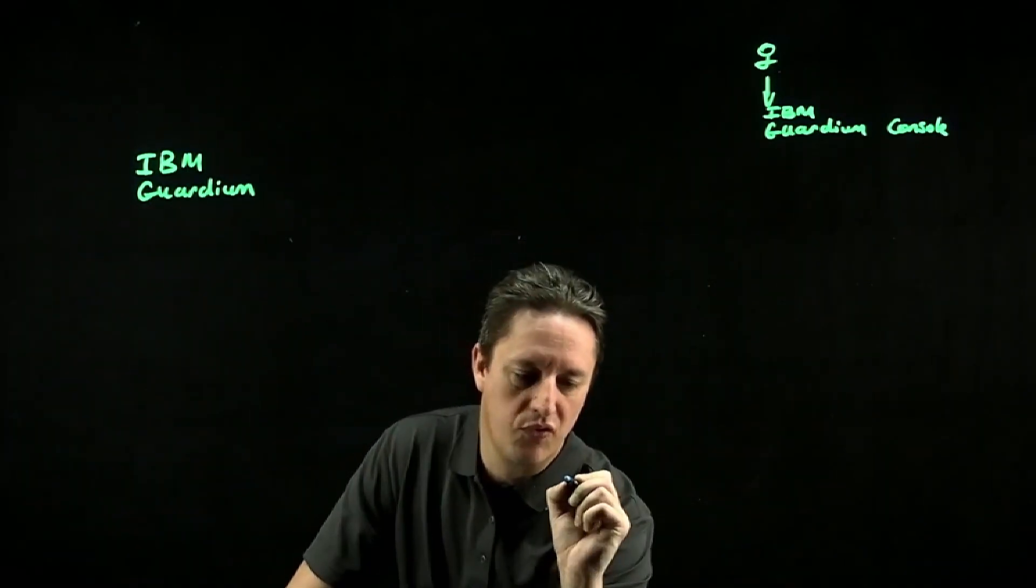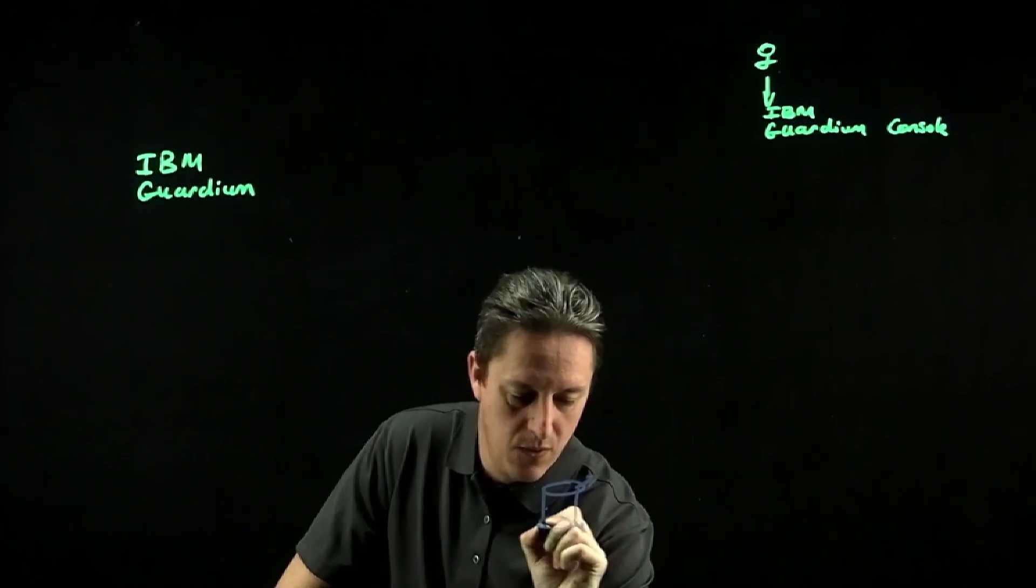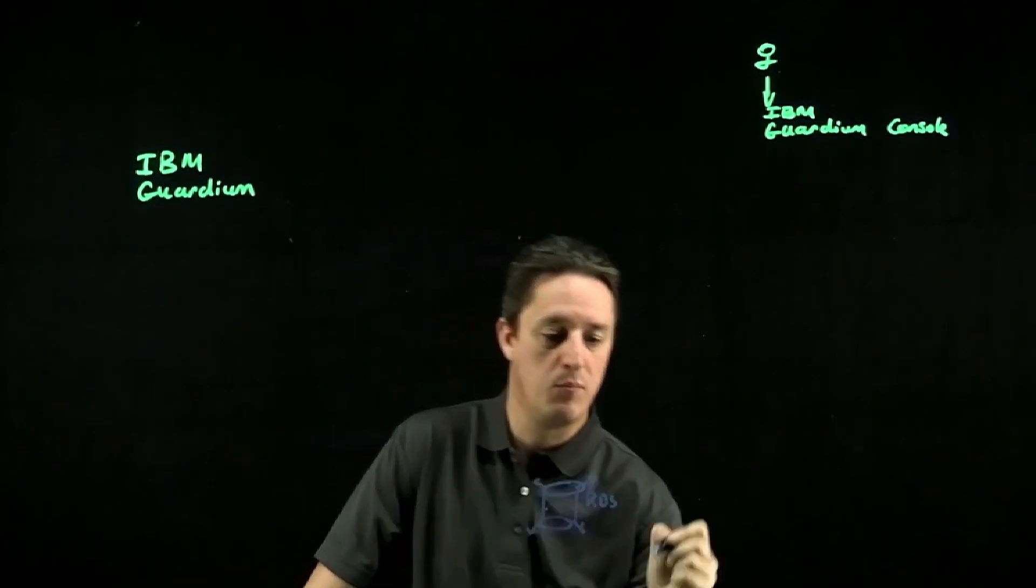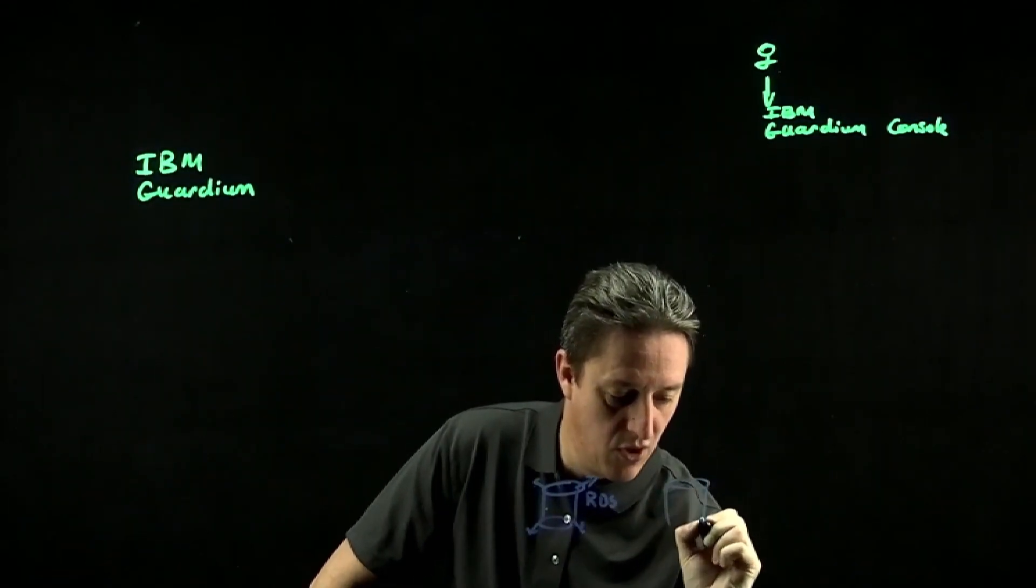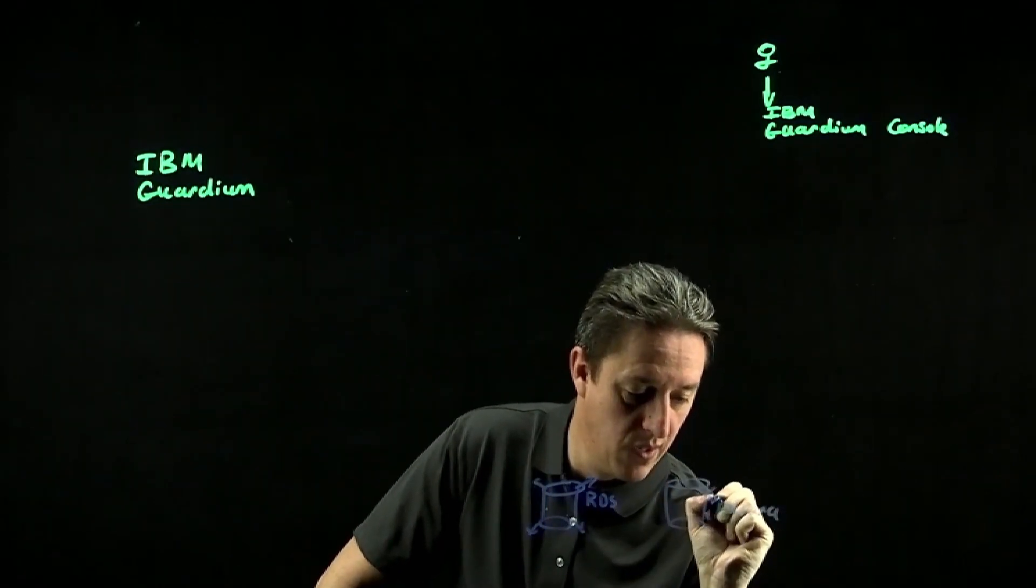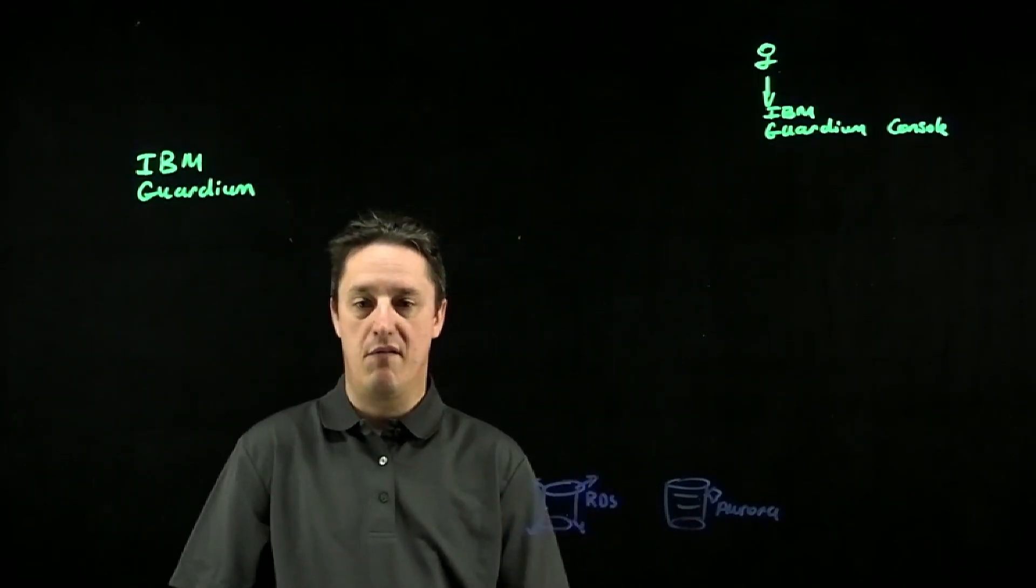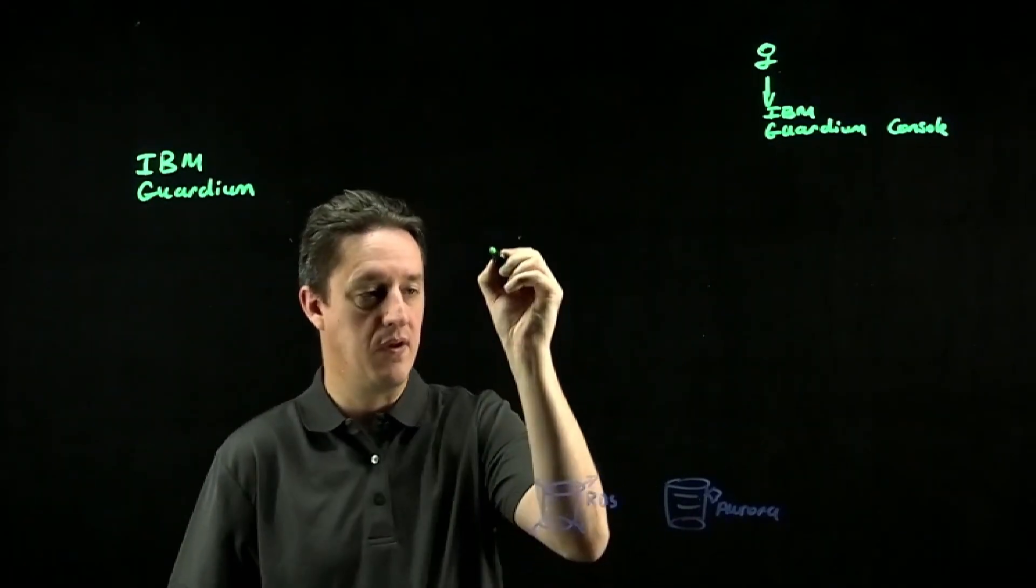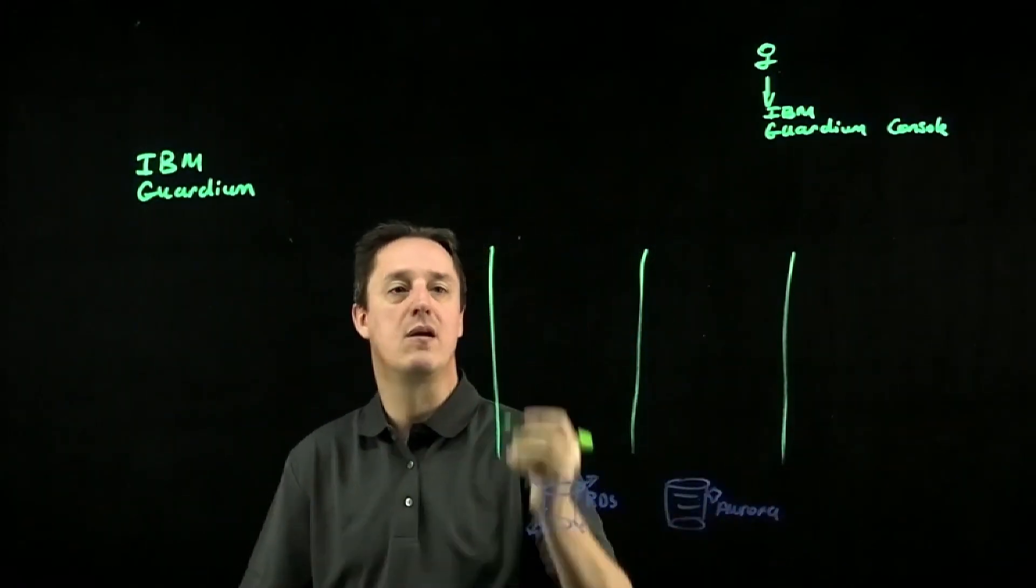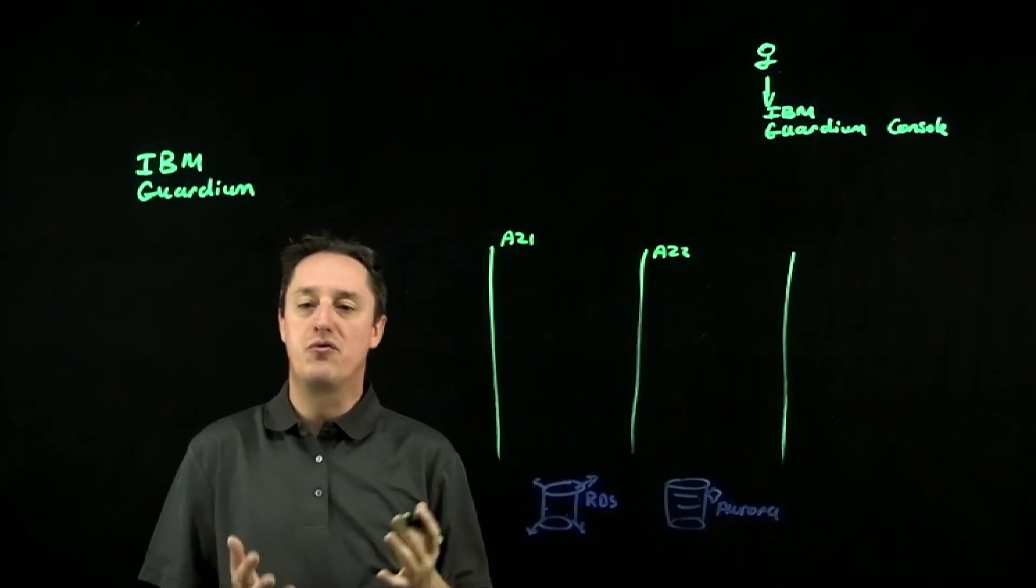Before we get to that, let's have a look at our data sources. Let's have an RDS implementation, and let's deploy Aurora as well. Most customers I work with will have RDS and Aurora deployed into a multi-AZ implementation, so I will have Availability Zone 1 and Availability Zone 2.